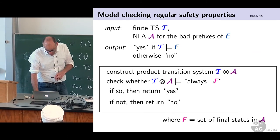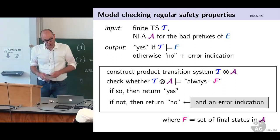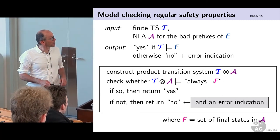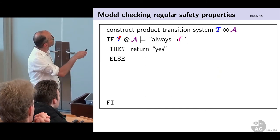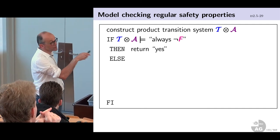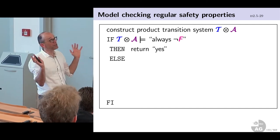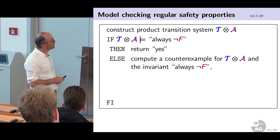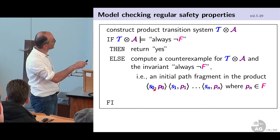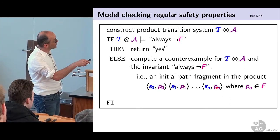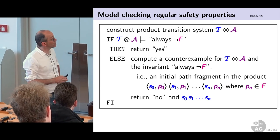So you can construct this counter example: if the property is satisfied, return yes; otherwise return no. The algorithm constructs the product, checks whether 'always not F' holds via depth-first search, and if not, computes a counter example — an initial path fragment in the product ending in an accepting state. The counter example returned to the user is this path with the automaton states erased, giving a trace in the original transition system.